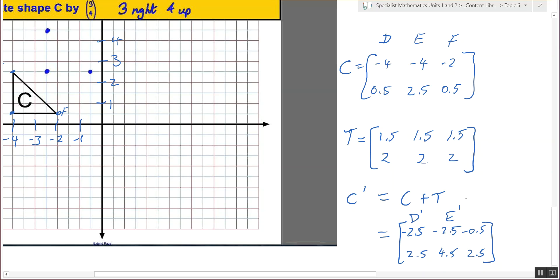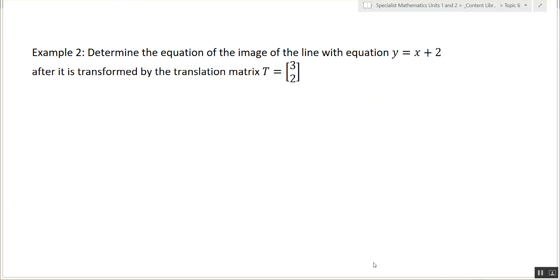D dash, E dash, and F dash, does that make sense? Okay, so we'll do another example. So we want to find the new equation. Does that make sense? So let's convert it into matrices. What does this equal? So x dash equals x plus three, y dash equals y plus two. Now how do we solve for the new equation?